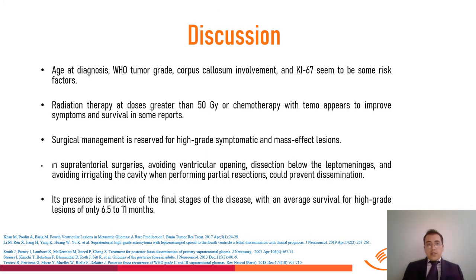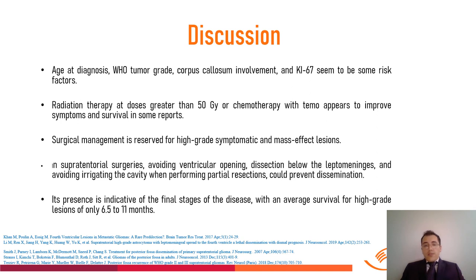Age at diagnosis, WHO tumor grade, corpus callosum involvement, and KI-67 appear to be risk factors. Radiation therapy at doses greater than 50 Gy or chemotherapy with Temozolomide appears to improve symptoms and survival in some reports. Surgical management is reserved for high-grade, symptomatic, mass-effect lesions. In supratentorial surgeries, avoiding ventricular opening, dissection below the leptomeninges, and avoiding irrigation of the cavity during partial resection could prevent dissemination to the fourth ventricle. However, its presence is indicative of a final stage of the disease, with average survival for high-grade lesions of only 6.5 to 11 months.